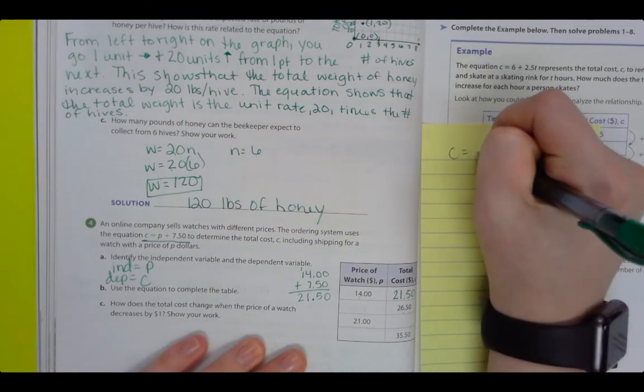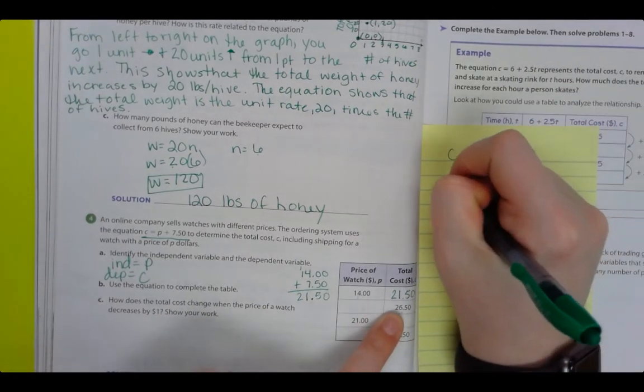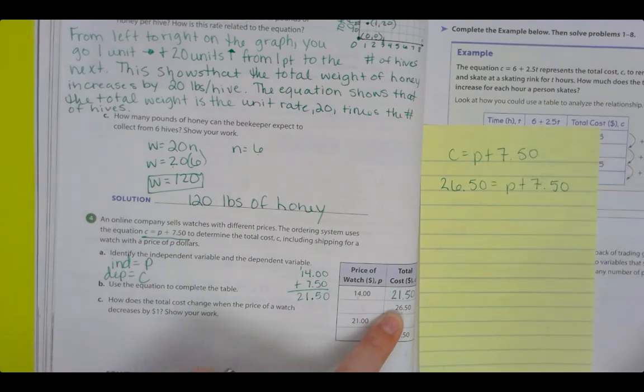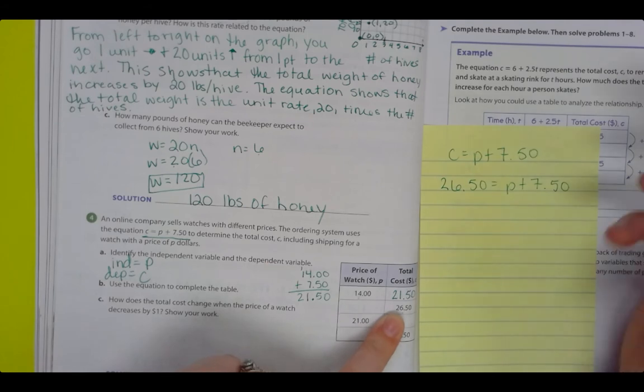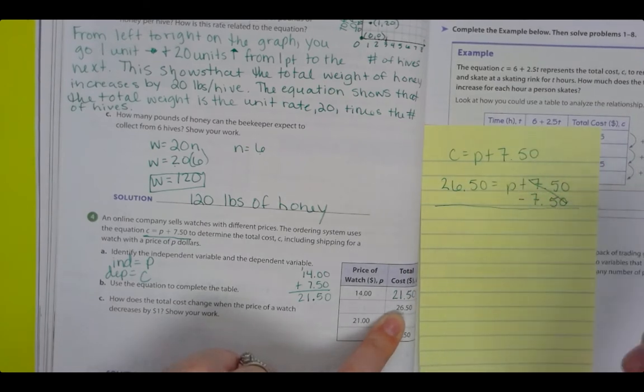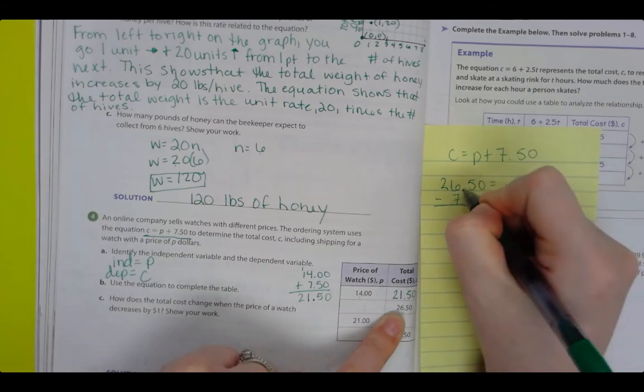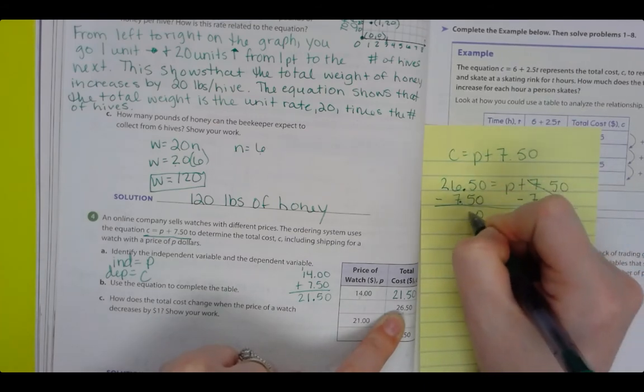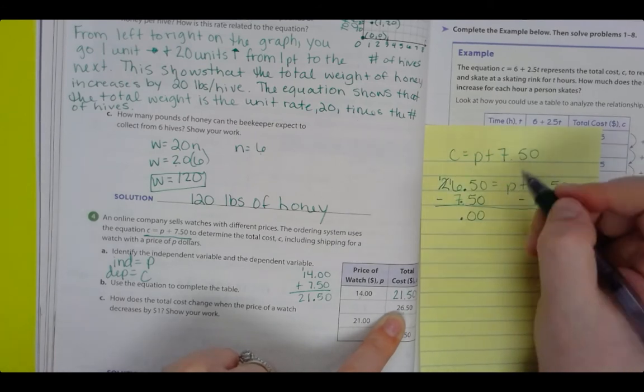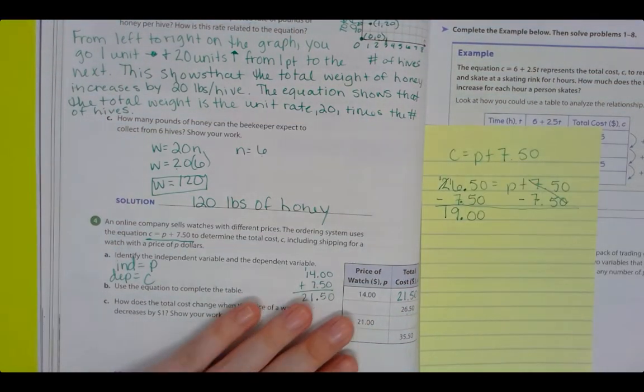All right, so C equals P plus $7.50. We know that the cost is $26.50 equals P plus $7.50. Now our goal is to isolate the variable. We use inverse operations. So the inverse operation will be subtraction. Subtract that number. It cancels out. Now what I do to one side, I gotta do to the other. And when I'm adding or subtracting decimals, I have to line up my decimals. 0 minus 0 is 0, 5 minus 0 is 0, bring down the decimal, 6 minus 7 can't do it. So I gotta go to my neighbor and borrow. 2 becomes 1, 6 becomes 16. So 16 minus 7 is 9. 1 minus 0 is 1. So I get $19.